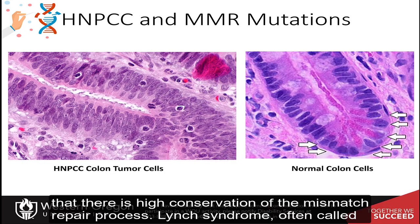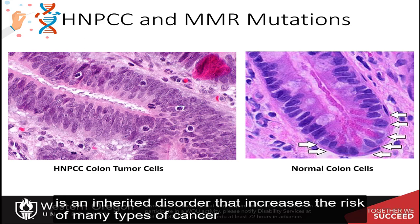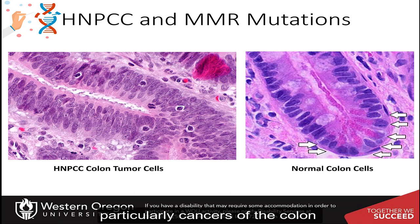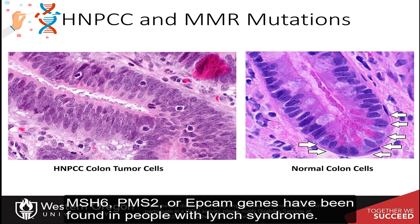Lynch syndrome, often called hereditary non-polyposis colorectal cancer, or HNPCC, is an inherited disorder that increases the risk for many types of cancer, particularly cancers of the colon or large intestine and rectum. Changes in genes involved with mismatch repair, such as the MLH1, MSH2, MSH6, PMS2, or EPCAM genes, have been found in people with Lynch syndrome.